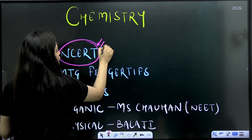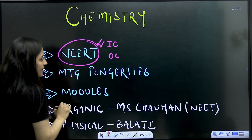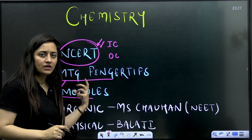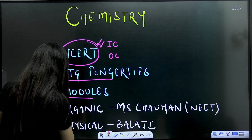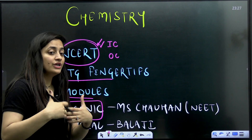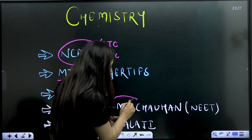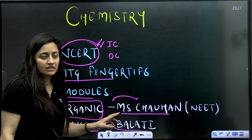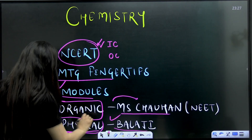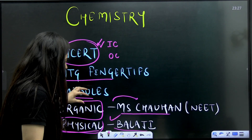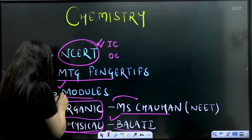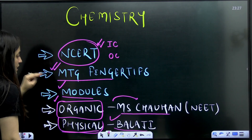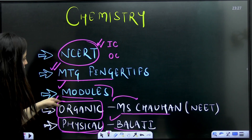For chemistry, especially inorganic and organic chemistry, start with NCERT. MTG Fingertips is again recommended for question practice, along with modules for PYQ and MCQ practice. If you need a book for organic chemistry theory and have no idea about it, you can go for MS Chauhan for NEET. For physical chemistry, the Balaji publication book is good — theory is explained well, MCQs are included, and these books help you understand topics in detail.